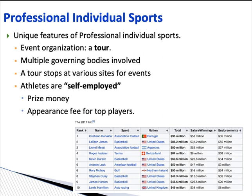The second thing that makes professional individual sports unique is they have multiple governing bodies involved. Professional team sports normally have one main governing body — the NFL, NBA, MLB, NHL, English Premier League — that sets the schedule for the whole season and determines which teams stay at that level and which get relegated to lower divisions. Professional individual sports are different: they have multiple governing bodies involved.